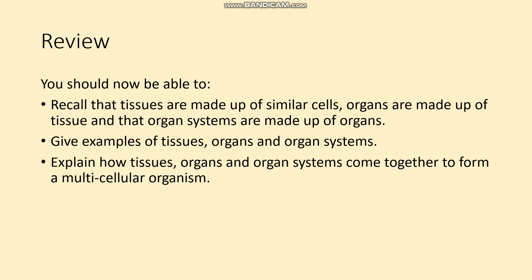So you should now be able to recall that tissues are made up of similar cells, organs are made up of tissue, and that an organ system is made up of organs. You should be able to give examples of tissues, organs and organ systems, and explain how tissues, organs and organ systems come together to form a multicellular organism. There'll be a little starter exercise at the beginning of the next lesson to make sure you've got that.